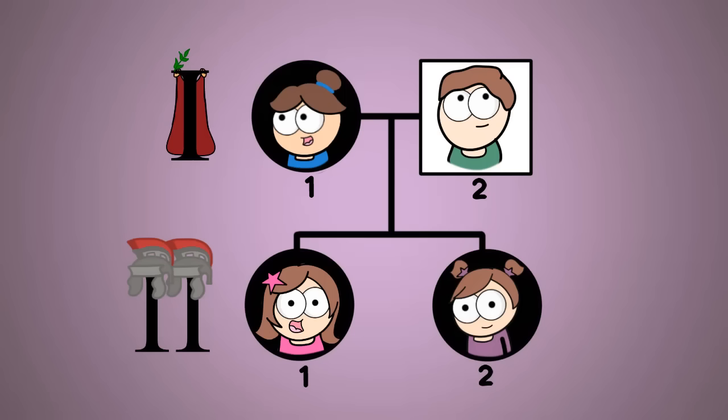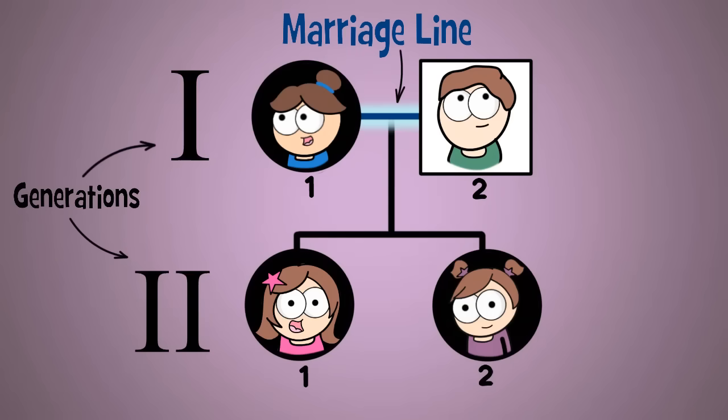If we take a look at this pedigree, these Roman numerals represent generations. There are two generations here. This line between my parents is called a marriage line. This line here connects parents to children, so you can see there are two children from this marriage.